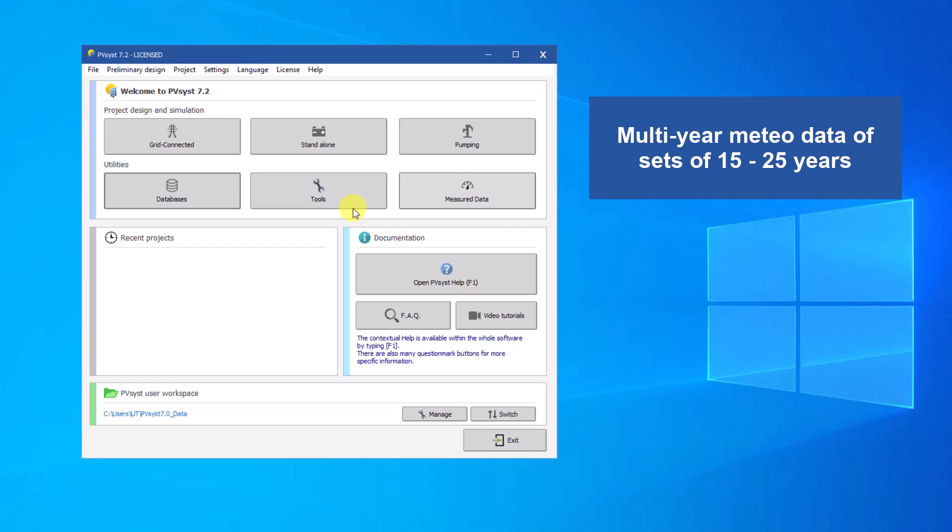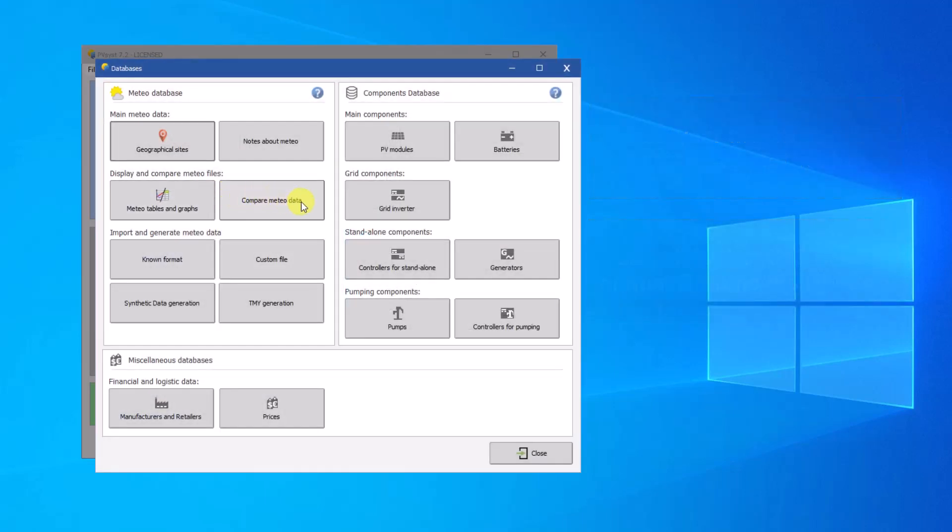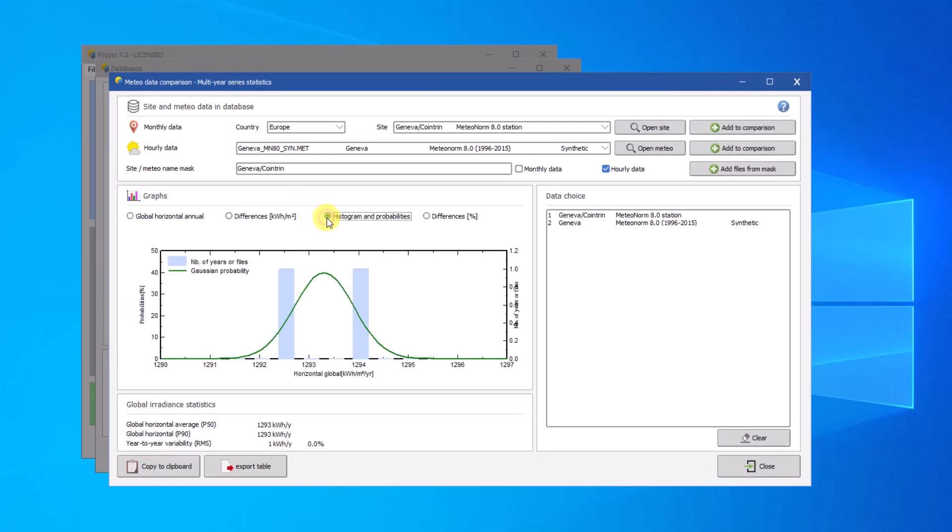If you avail of such Meteo data for your site, you can calculate the RMS of the annual global incident irradiance distribution. You have a tool for doing this in PVSyst. Please use Databases, Compare Meteo Data, and here choose the corresponding Meteo file for different years. You have an option, histogram, and probabilities, which shows the Gaussian distribution, average, and RMS.